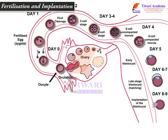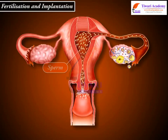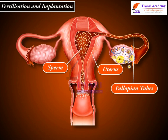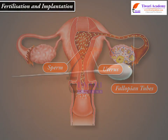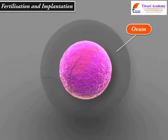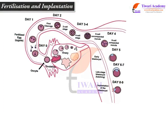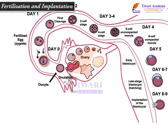Fertilization of the ovum occurs in the fallopian tube. The movement of sperm on this long journey is helped by muscular contraction of the walls of the uterus and the fallopian tubes. Only one sperm will succeed in fertilizing the ovum by penetrating its cell membrane and depositing the male genetic material into the female cell where the two nuclei fuse.